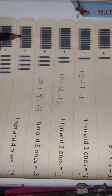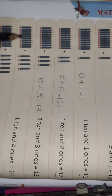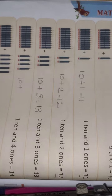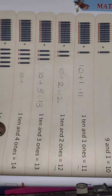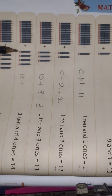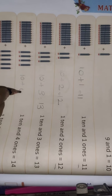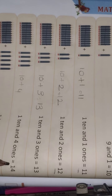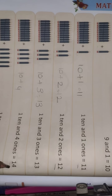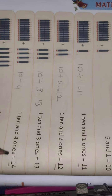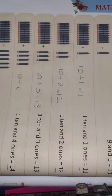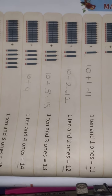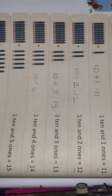Next — 1 ten, plus how many spare pencils? Count: 1, 2, 3, 4. That's 4 spare pencils. 10 plus 4 — 1 ten and 4 ones equals 14.